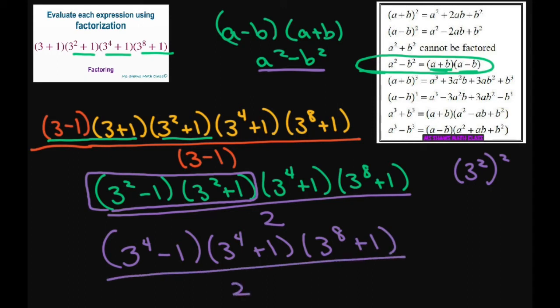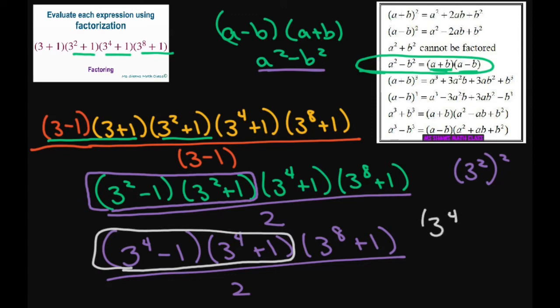Now we're going to do the same thing again. This one is going to give you 3 to the power of 4 squared, which is going to be 3 to the power of 8 minus 1, using this formula again. So that gives us 3 to the power of 8 minus 1 times 3 to the power of 8 plus 1, and again we're dividing by 2.